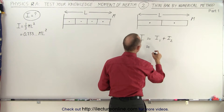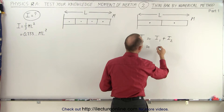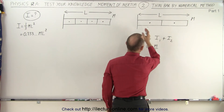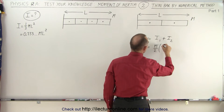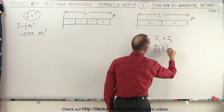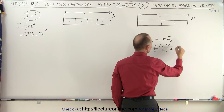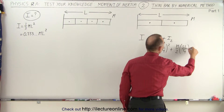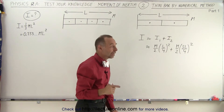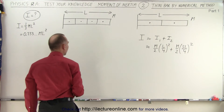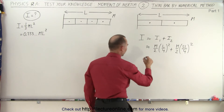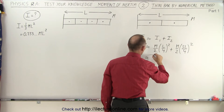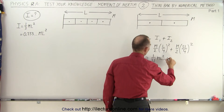This is going to be approximately equal to mr squared. The mass of the first section would be M divided by two, and the distance would be one quarter the length, so it would be (L/4) squared. Plus the moment of inertia of the second section — again half the mass, M/2, times the distance squared, in this case three quarters the length, (3L/4) squared.